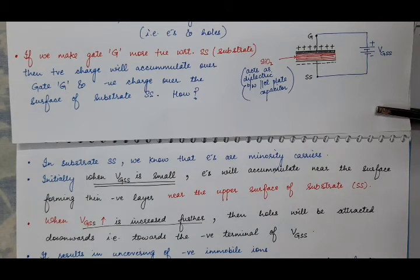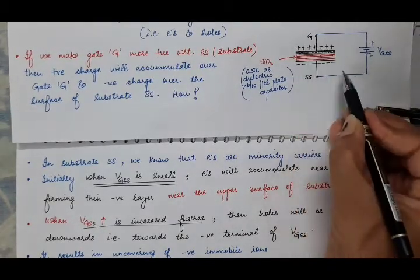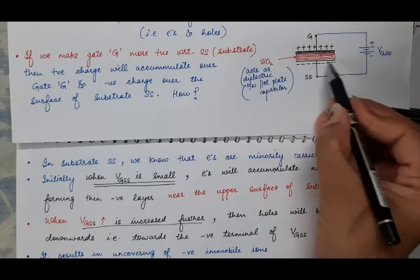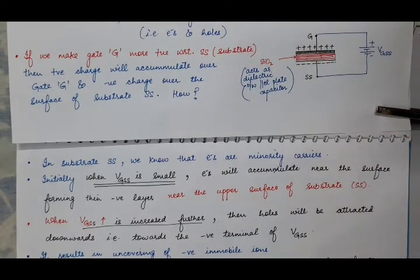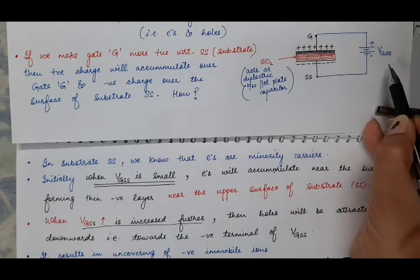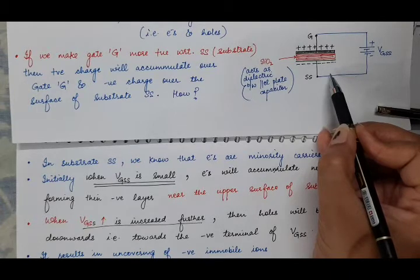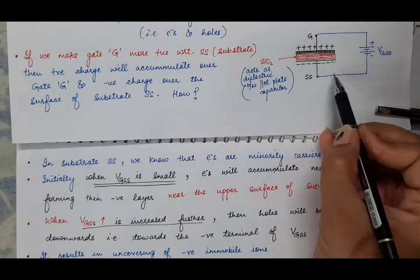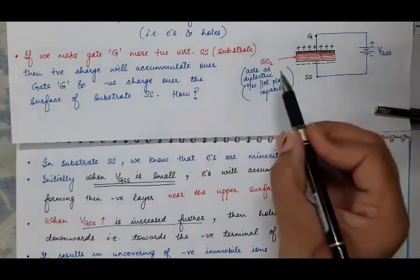In this way, the N-channel MOSFET channel is created. The width of this channel will increase — more and more negative charge will accumulate near the surface, enhancing the width of this N-channel — when you keep on increasing VGS. That is why this is known as enhancement type MOSFET, because as you keep on increasing VGS, more and more negative charge accumulates near the surface of the substrate, creating or enhancing the width of the channel between source and drain. Therefore, more and more charge carriers flow from source to drain.